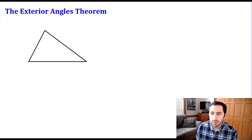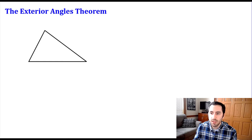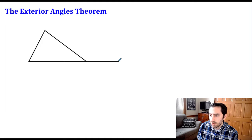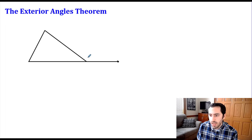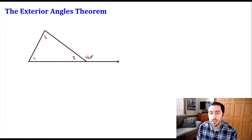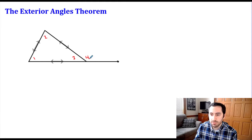We start off with a triangle. The exterior angle theorem deals with one of the exterior angles of this triangle. An exterior angle is formed by extending one of the sides — so if I take this bottom side of the triangle and extend it out beyond the triangle, the exterior angle is the angle on the outside. Let's label these: angle one, angle two, angle three are all our interior angles, and the angle on the outside we'll call angle four — that's our exterior angle.